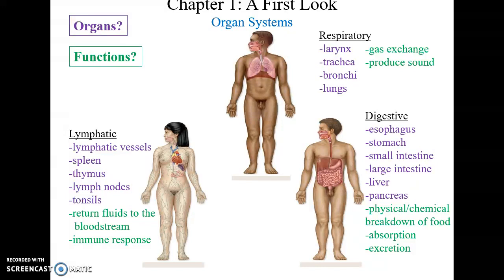The lymphatic system is composed of many vessels linked together that help return excess fluids to the bloodstream, as well as structures involved in immune response, such as the spleen, thymus, lymph nodes, and tonsils.